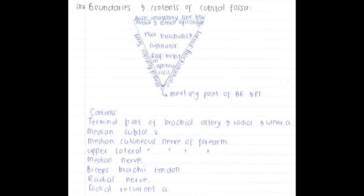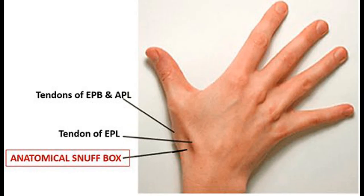The anatomical snuff box is very important because it's where you find your radial artery, which is clinically relevant for taking your pulse. You need to know its boundaries and contents, which include your radial artery, the superficial branch of your radial nerve, and the beginning of your cephalic vein.